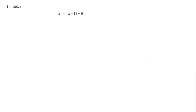Hi, Mr. Corsi here. In this question we're asked to solve this quadratic equation. Now because there's no indication about accuracy of solutions to one decimal place or whatever, we can be pretty sure that it's a factorization method that we're going to use. So let's have a look at x squared minus 11x plus 24 equals 0.